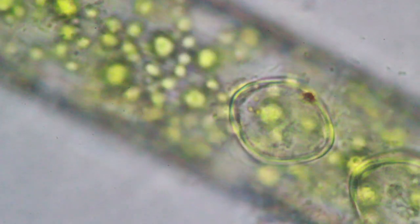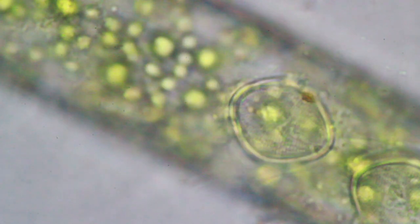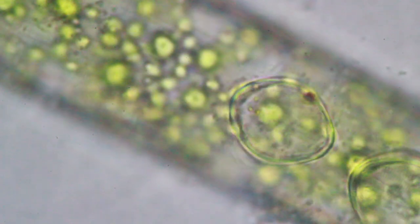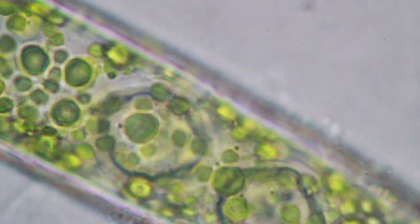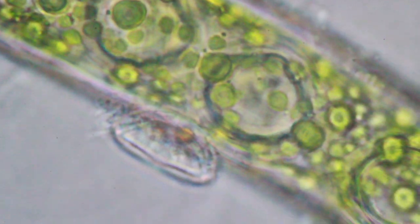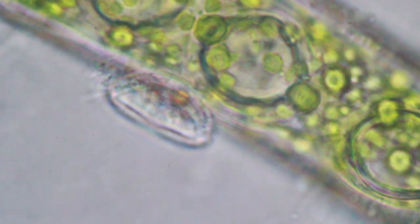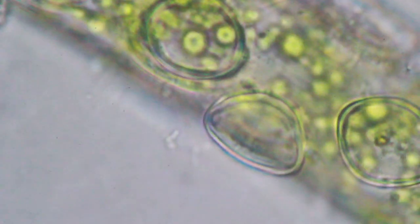These are round things here, these seem to be diatoms growing on the algae. I know that these are, or I think these are diatoms, because you can see actually the structure of the shell. If you focus back and forth carefully, you can actually see the texture of the shell a little bit, which is typical for diatoms.